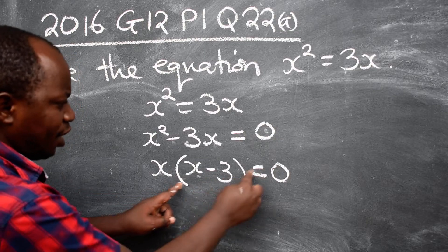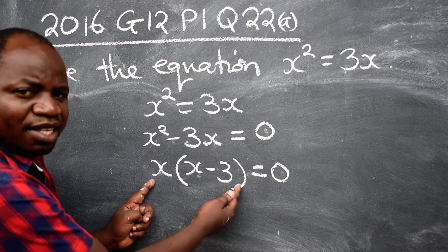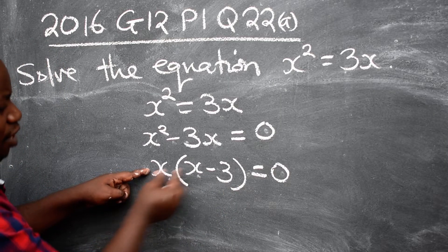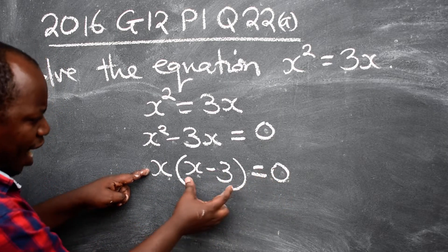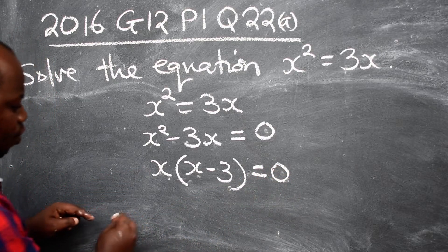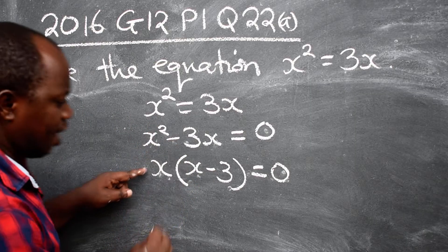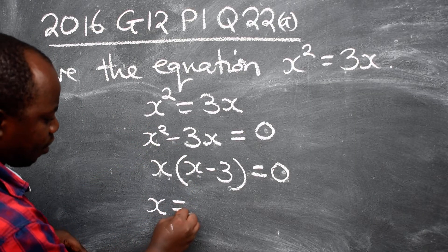If you have an equation equated to 0 and you are factorized like this, then we are saying whatever is outside should be equated to 0, and also what is inside should be equated to 0. So in short we are saying x = 0. That will be the first value, x = 0.